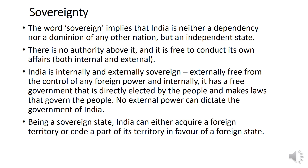From 15th August 1947 till 26th January 1950, India was a dominion under the British Commonwealth. The King — or rather the Queen at that point of time — still held the title of the Empress of India, meaning India was still a dominion of the British until 26th January 1950. But on 26th January 1950, when India was declared a republic, India truly became a sovereign country.